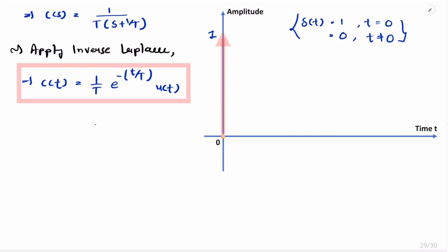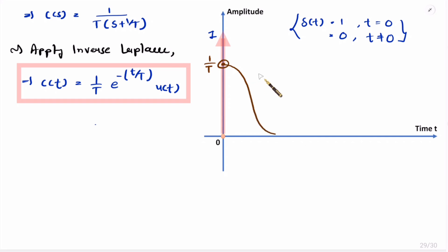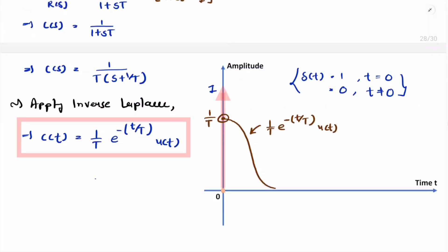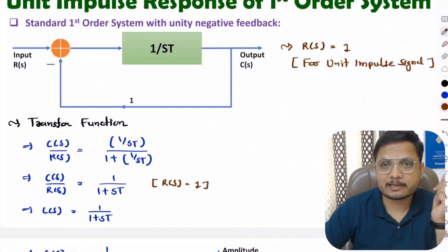As time t increases, the term e to the power minus t/T decreases, so the resultant output decreases exponentially. The output is (1/T) multiplied by e to the power minus t/T, valid for t greater than 0, which is why we multiply by u(t). This is the response with a unit impulse signal for a standard first order system.